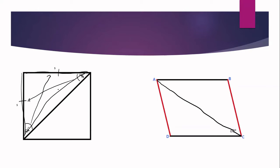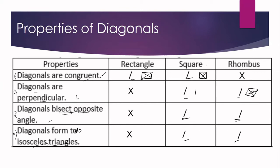Specifically in a square, this is an isosceles right triangle because it has a right angle and two congruent sides. In a rhombus, diagonal AC bisects angle A and angle C, giving us 30 degrees and 30 degrees. Since these two angles are congruent, the two opposite sides are congruent. Therefore triangle ABC is an isosceles triangle because side AB and side BC are congruent. That is why in a square and a rhombus, the diagonals form two isosceles triangles.